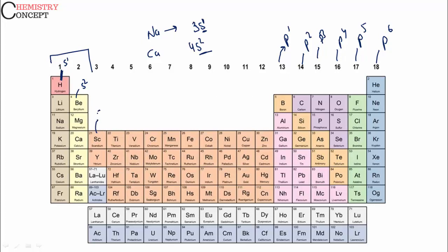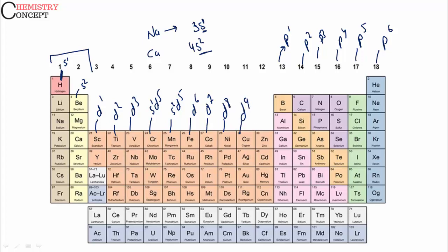For d-block, group 3 corresponds to D1, group 4 to D2, group 5 to D3. Then there are exceptional configurations: group 6 is S1D5, group 7 is S2D5. Continuing, group 8 is D6, group 9 is D7, group 10 is D8, group 11 is D9 — actually D10 exceptional — and group 12 is D10. These are the exceptional electronic configurations in the d-block.